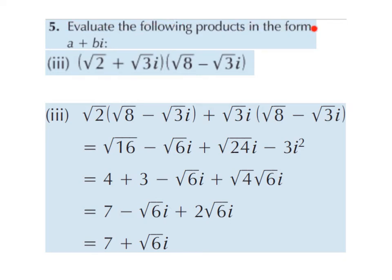Evaluate the following products in the form a plus bi, where a is the real part and bi is the imaginary part. We want to evaluate this by multiplying out the double brackets using binomial expansion, and end up with a complex number — a real part and an imaginary part.